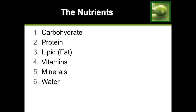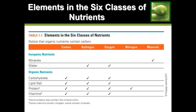The first way to categorize these nutrients is to divide them as organic and inorganic. In this class, we're not referring to the organic section of the grocery store. We're referring to organic in the scientific term, meaning the chemical structure contains carbon. If it does contain carbon, it's organic; if the structure doesn't contain carbon, it's inorganic.